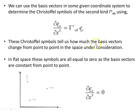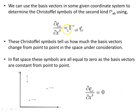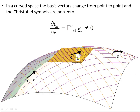These Christoffel symbols tell us how much the basis vectors change from point to point in the space under consideration. In flat space, these symbols are all equal to zero, as the basis vectors are constant from point to point. The Cartesian basis vectors are fixed, constant unit length, so their partial derivatives are zero and all Christoffel symbols of the second kind are zero. In curved space, the basis vectors change from point to point, so the Christoffel symbols are non-zero.